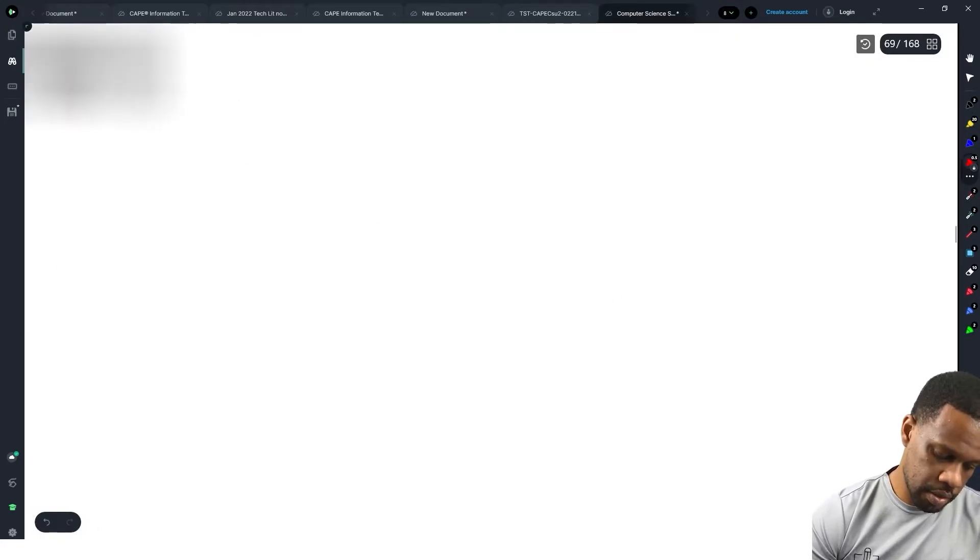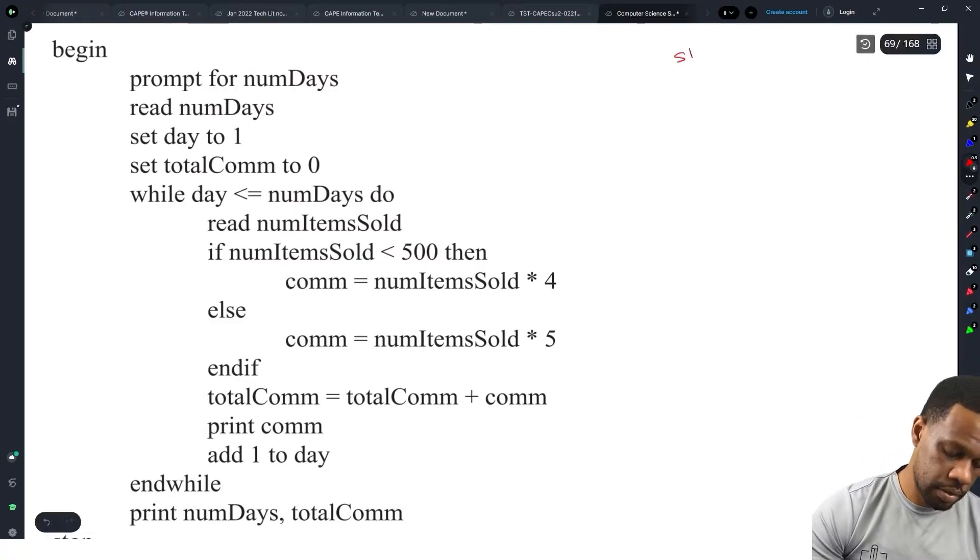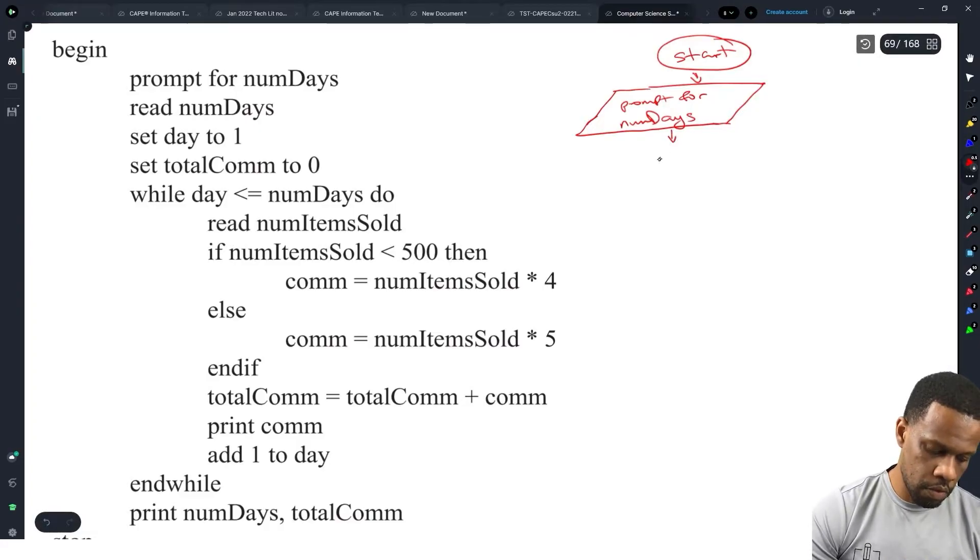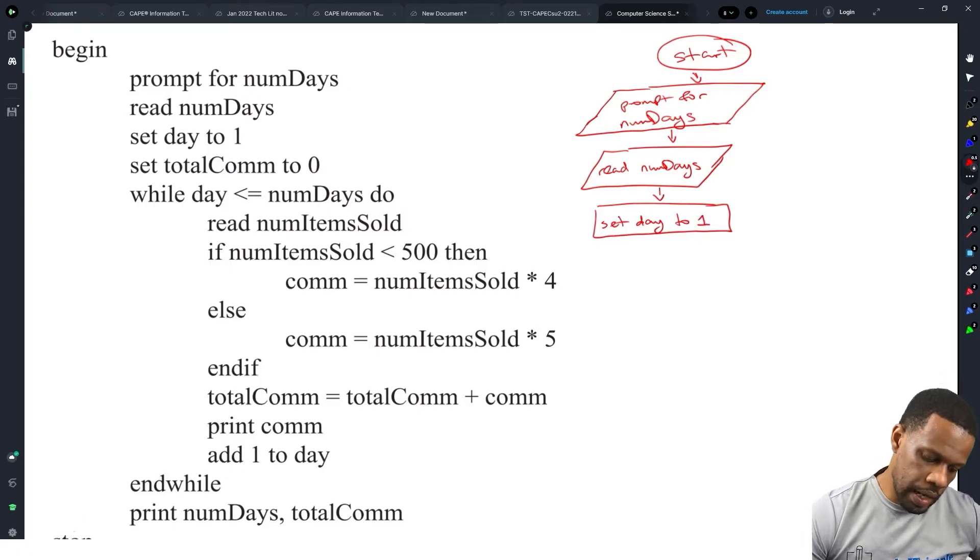Alright. So we go with start to get as close as possible. So we have the beginning. Start. Prompt for number of days. That will be a parallelogram. Prompt for number of days. For num days. Read num days. Read num days. Alright.